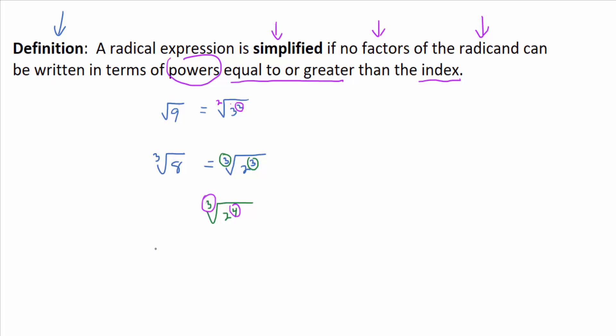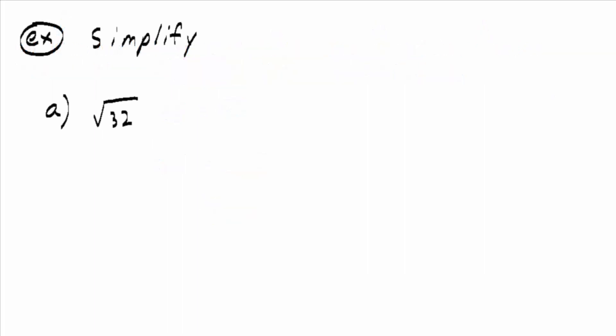That's what the definition is saying: if you factor the radicand, it's simplified only if you can't write any of those factors with powers equal to or bigger than the index. I'm going to show you a method that looks a little more complicated at first, but it's consistent and it works on harder problems, so be patient.